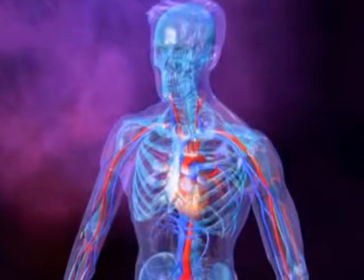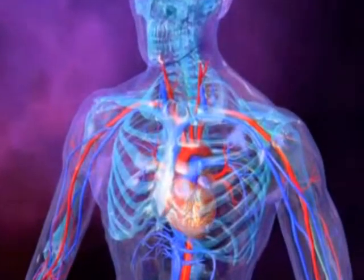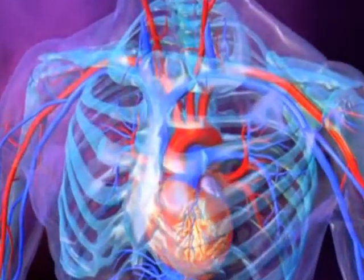The aorta is the main artery of the circulatory system. Its function is to carry oxygen-rich blood from the heart to the rest of the body.